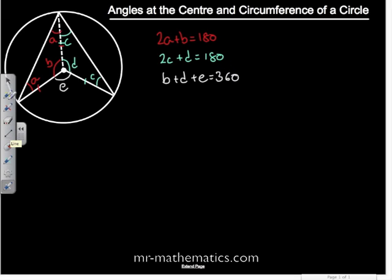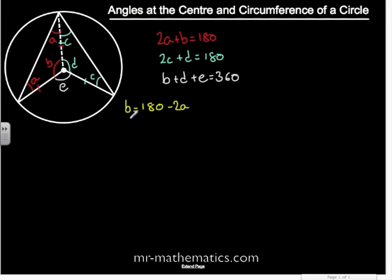We're going to equate angle B from our first equation. So angle B must equal 180 minus 2A. We'll do the same for D from the blue equation. So angle D equals 180 minus 2C.